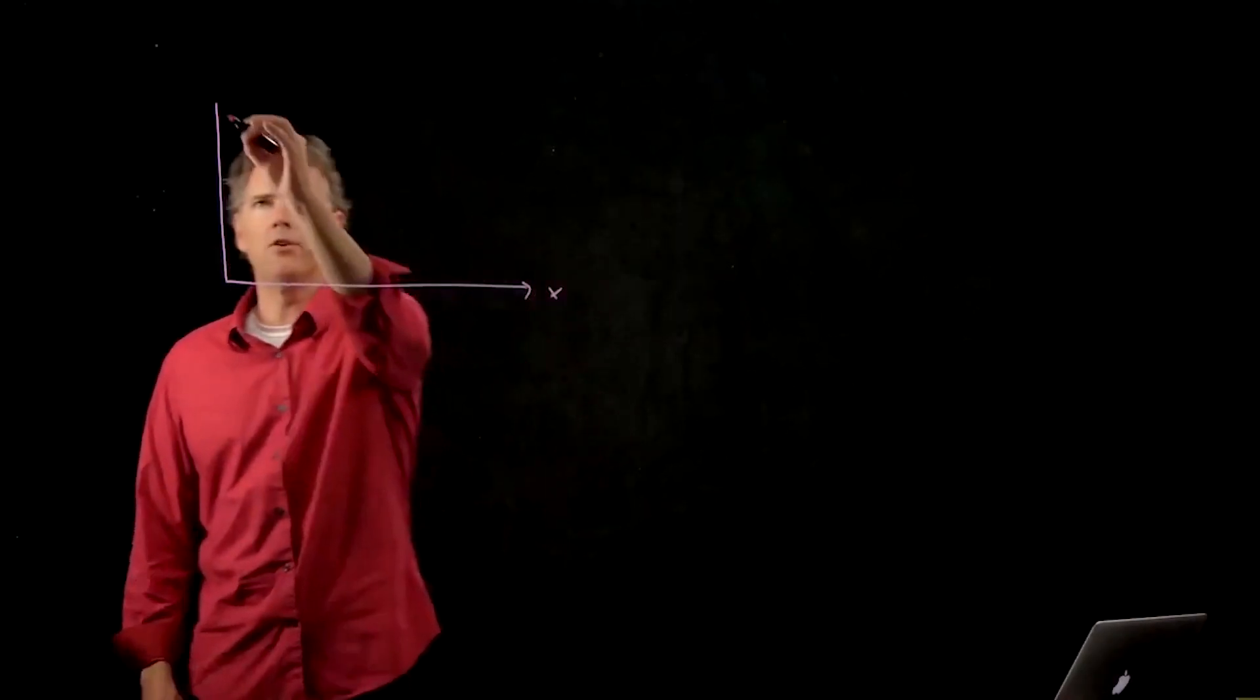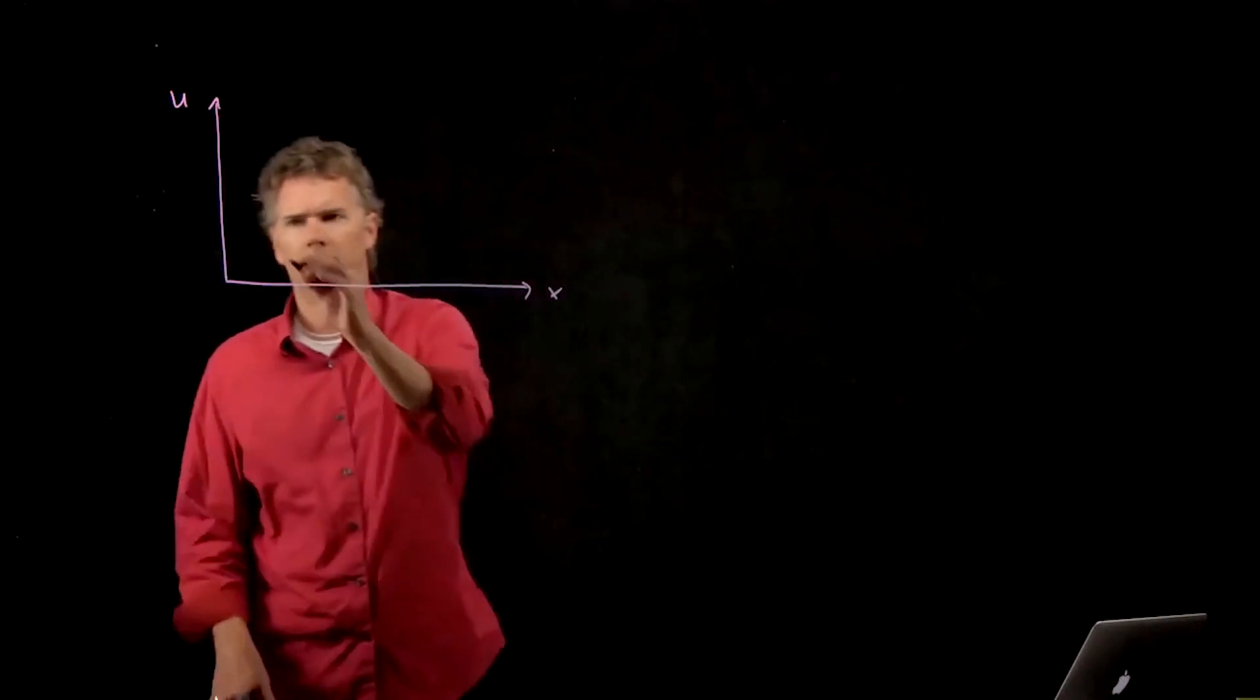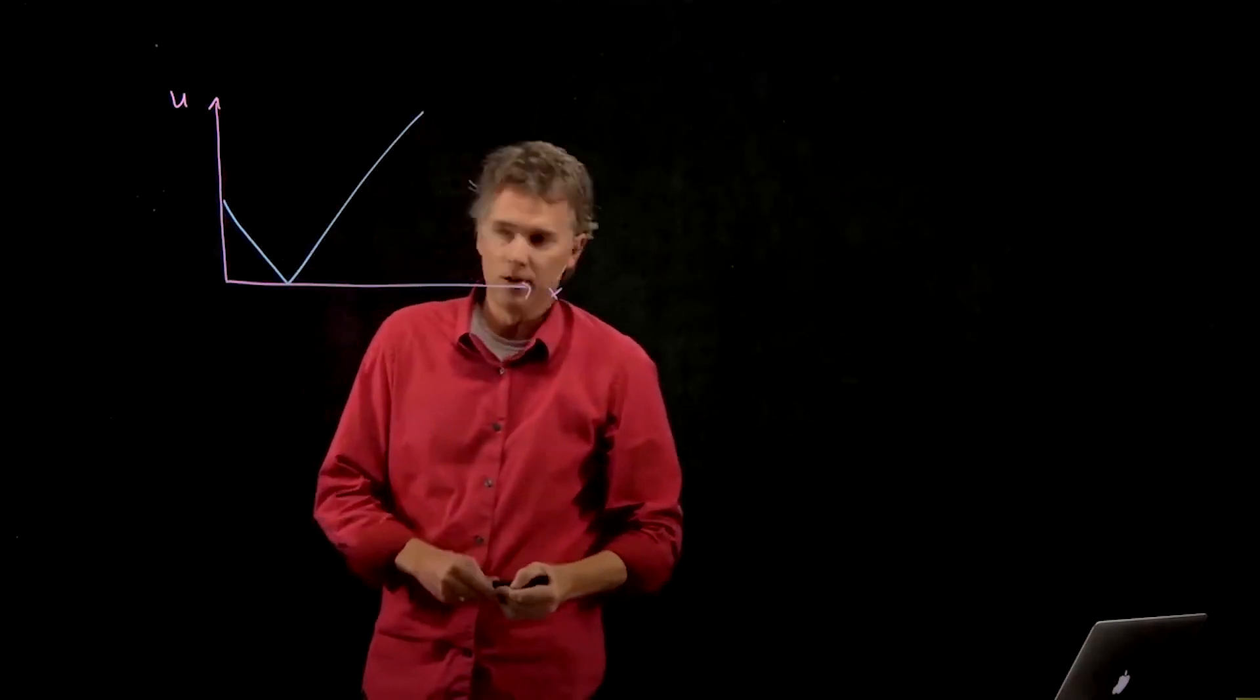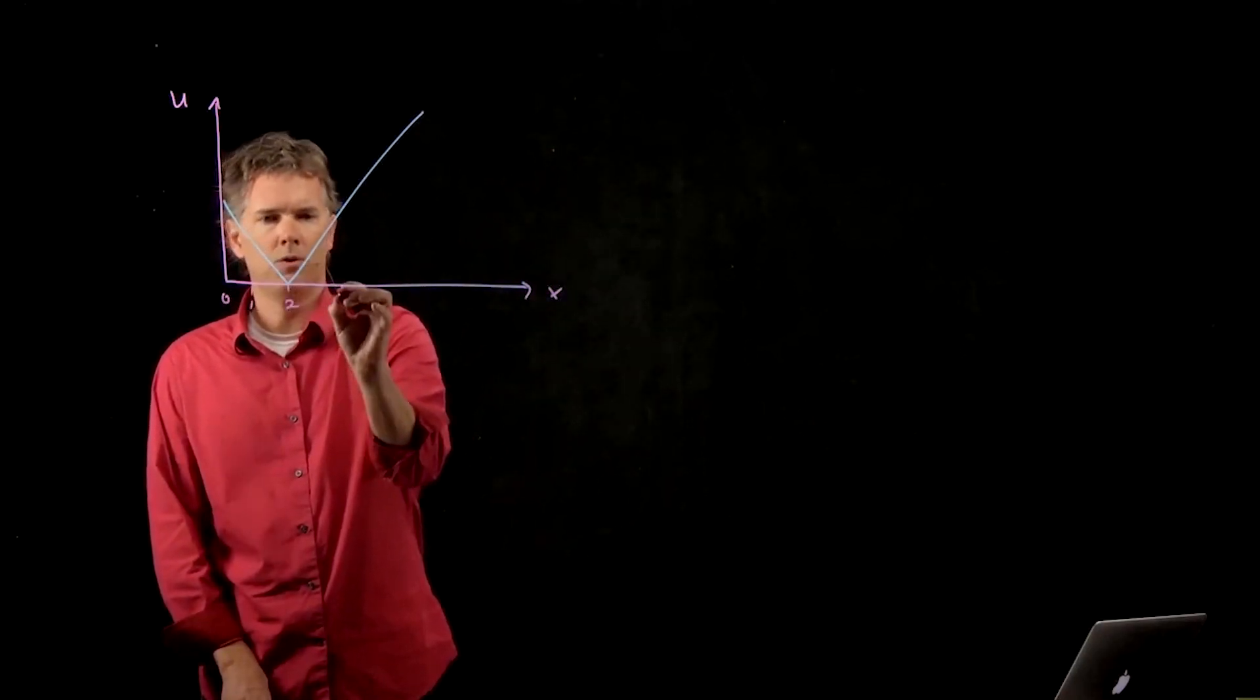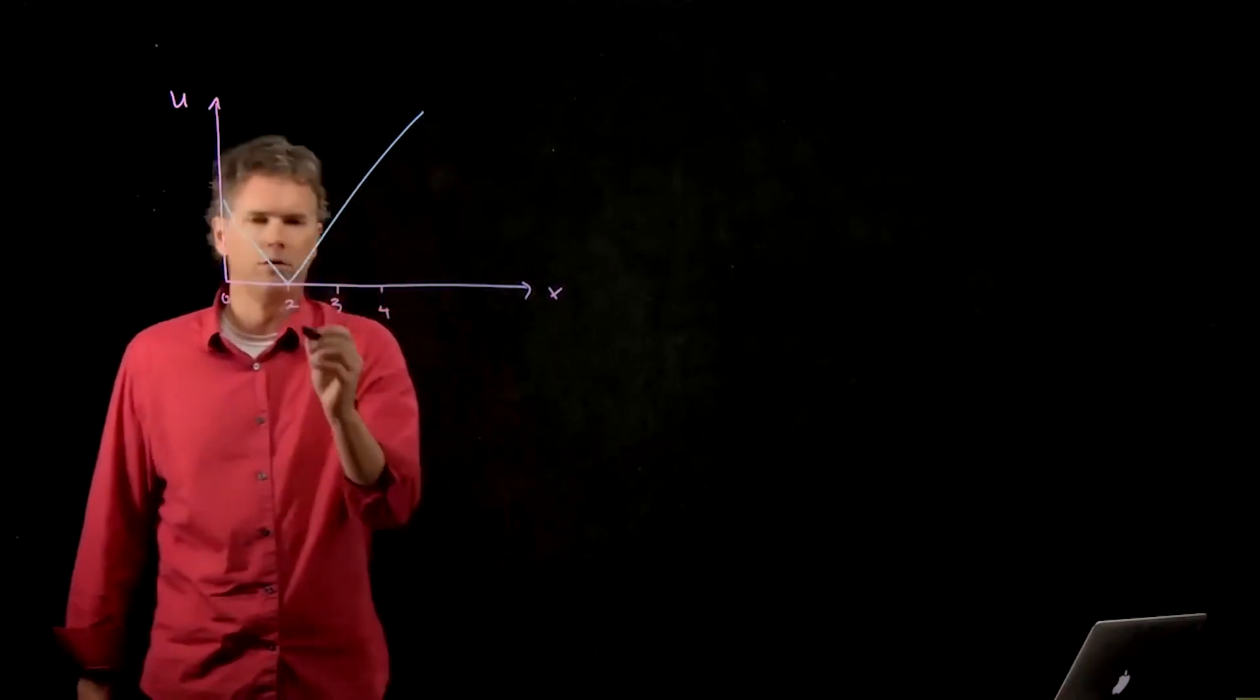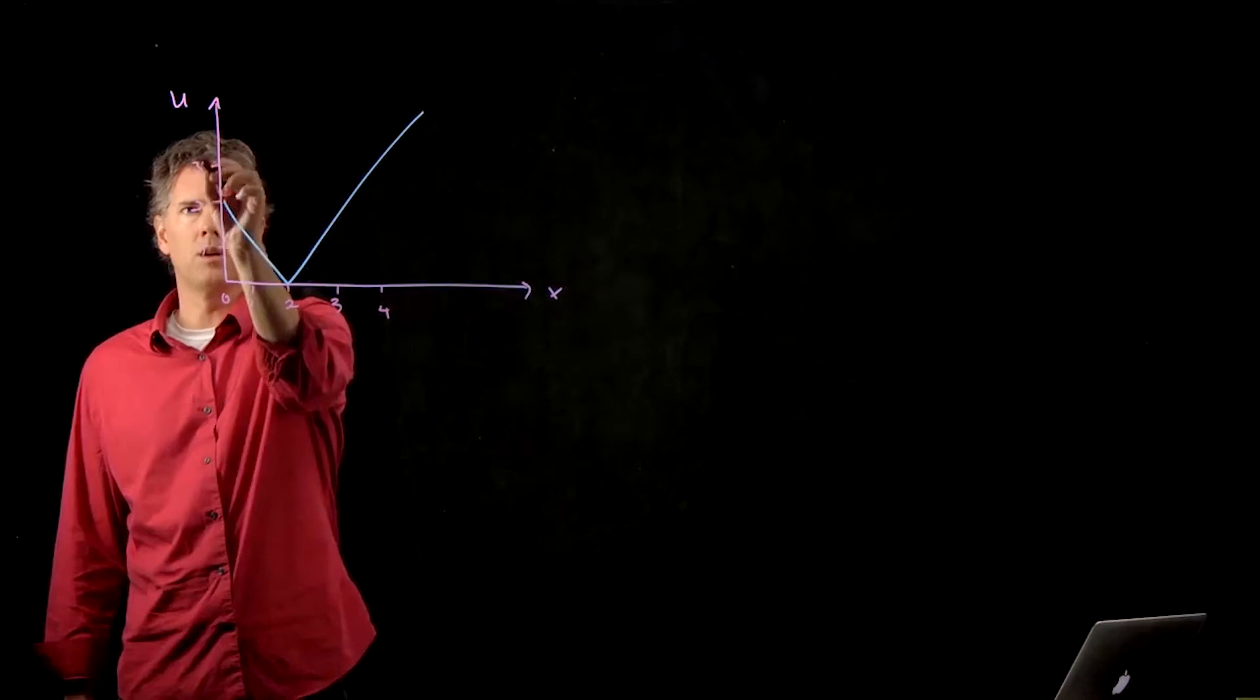So in this question we have the following. We have a potential energy curve for a particle as a function of x and it looks like this. And the values here are 0, 1, 2, 3, 4. And it goes from 0, 1, 2, 3, 4.